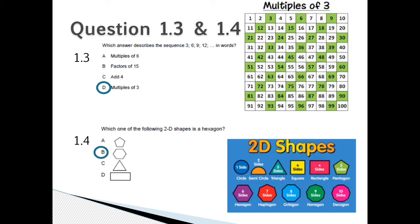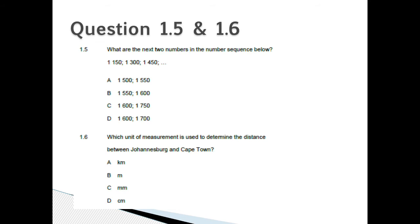Question 1.4: The hexagon has 6 sides, therefore your answer is B. 5 sides is a pentagon, 6 sides is a hexagon, 7 sides is a heptagon, 8 sides is an octagon, 9 sides is a nonagon, and 10 sides is a decagon.